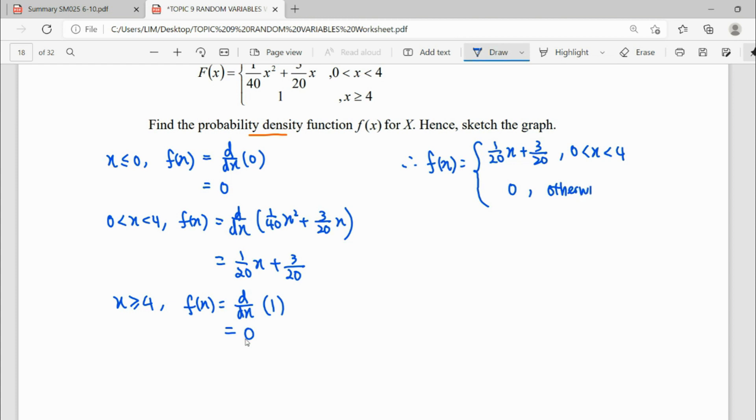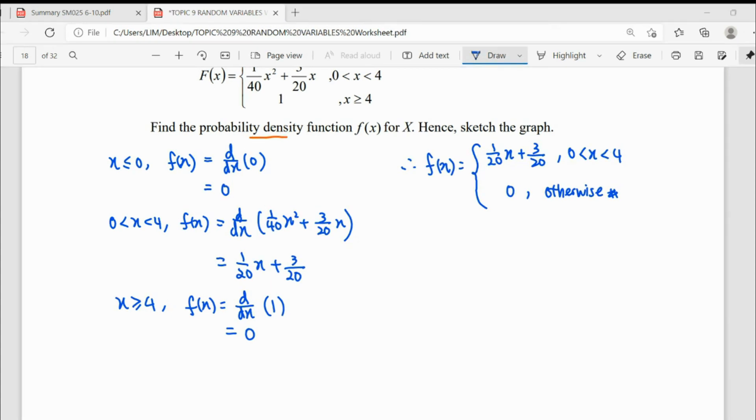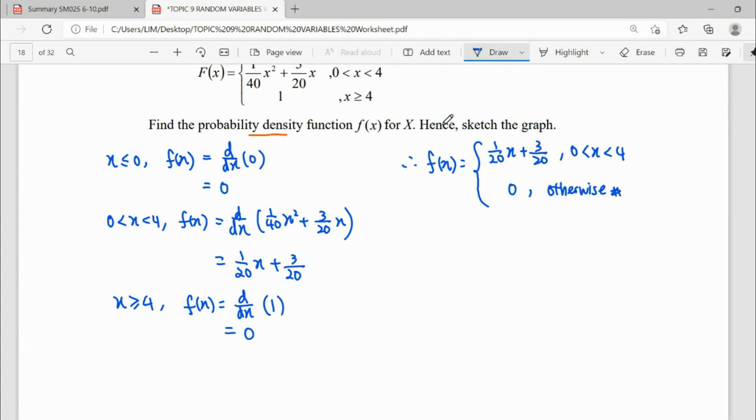So you have another part is 0 for other values. So this is our probability density function f(x). After we get f(x), you can see here they say hence. Hence means by referring to the answer, sketch the graph.